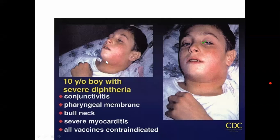The pharyngeal membrane has been affected — the pharynx — from the nose and mouth connected area. The pharyngeal membrane will be present in these areas. Then 'bull neck' — you can see the neck was enlarged, something like a bullet. Then severe myocarditis.